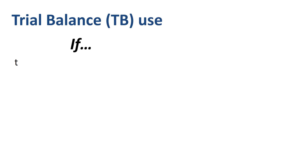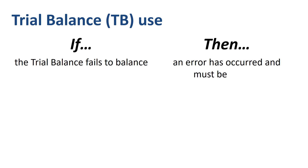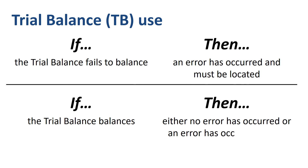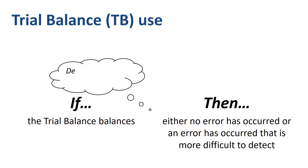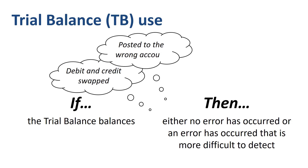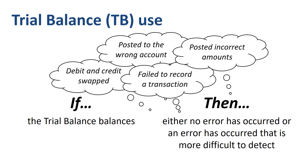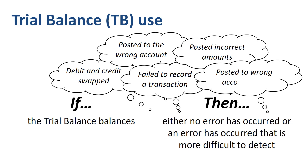What can we conclude now that our trial balance is balancing? If the trial balance fails to balance, then we know that an error has occurred and must be located. If the trial balance is balancing, then either no error has occurred, or an error has occurred that is more difficult to detect. For example, maybe the debit and the credit in the journal entry were swapped, or a journal entry may have been posted to the wrong account, or a transaction has not been recorded altogether, or a journal entry was posted for incorrect amounts or to the wrong account type.